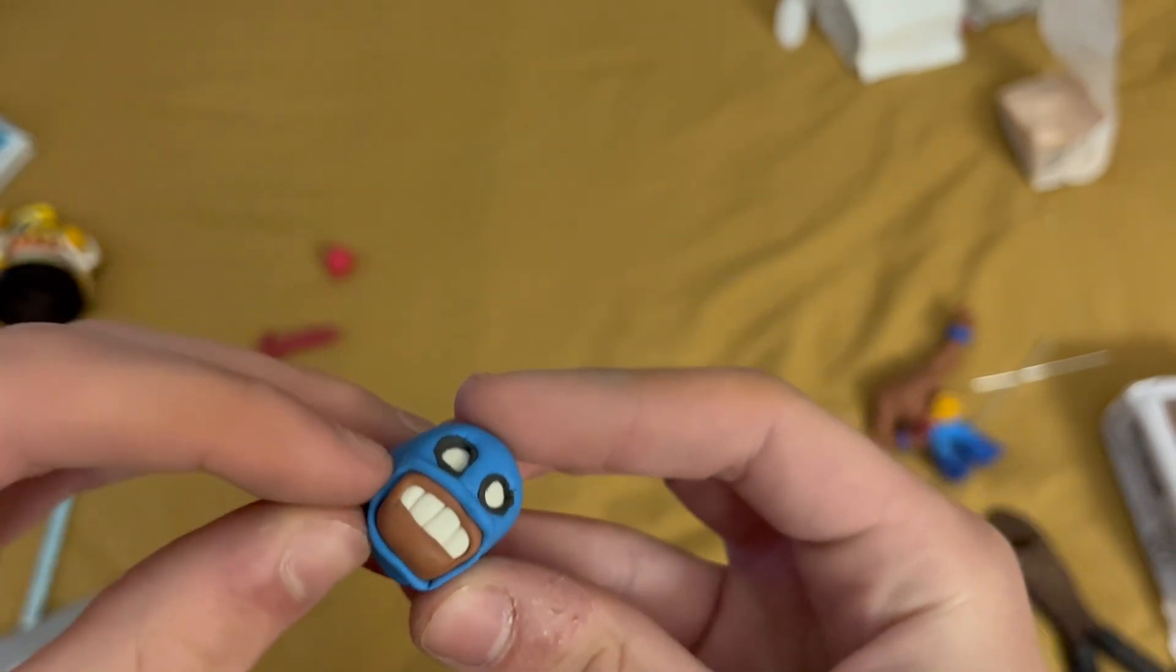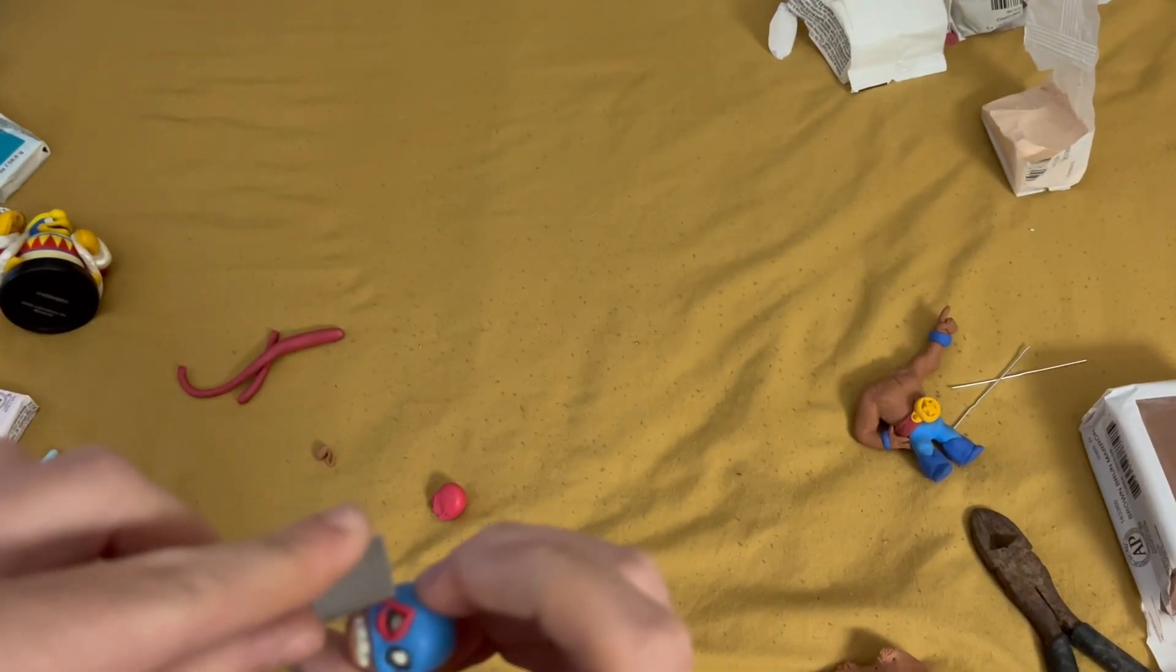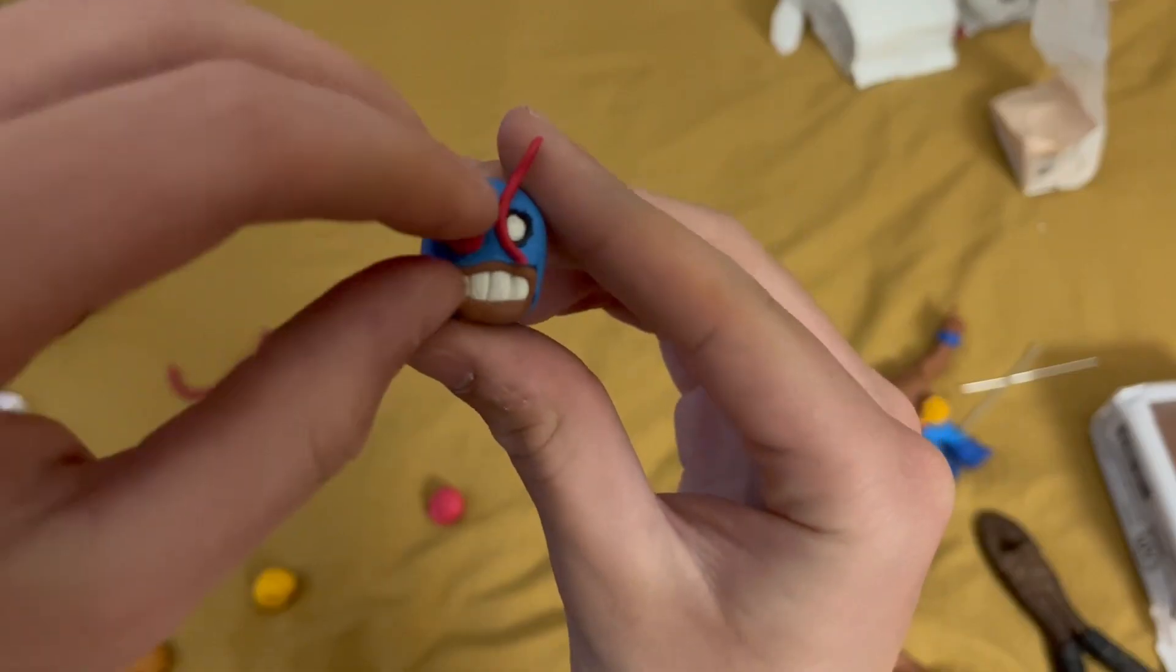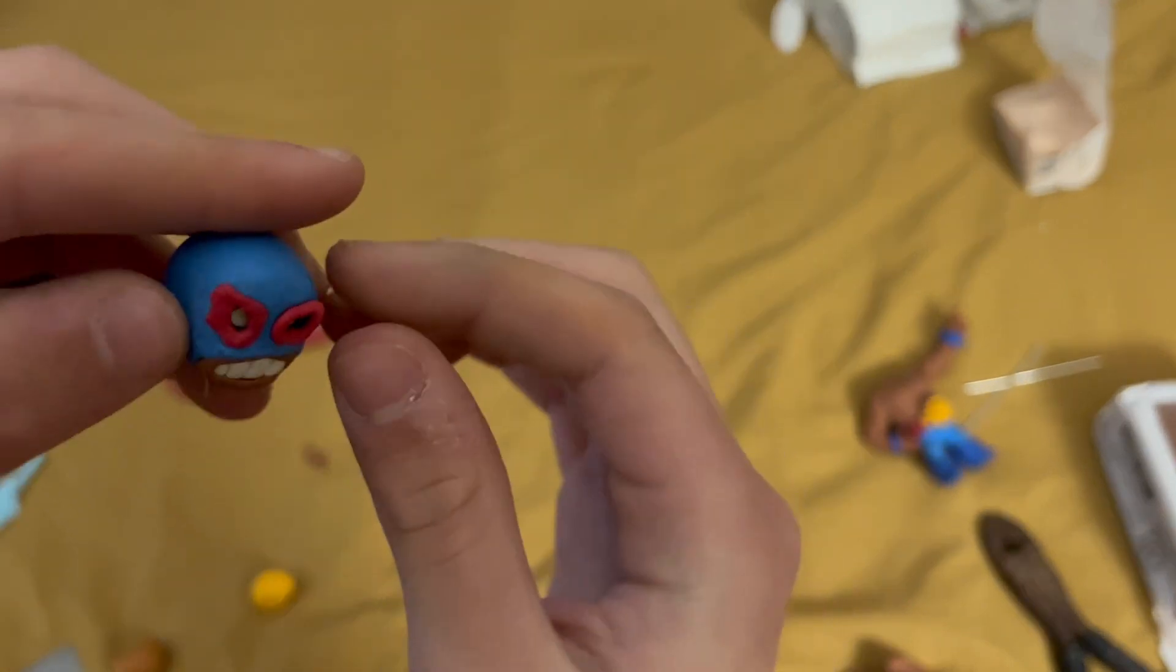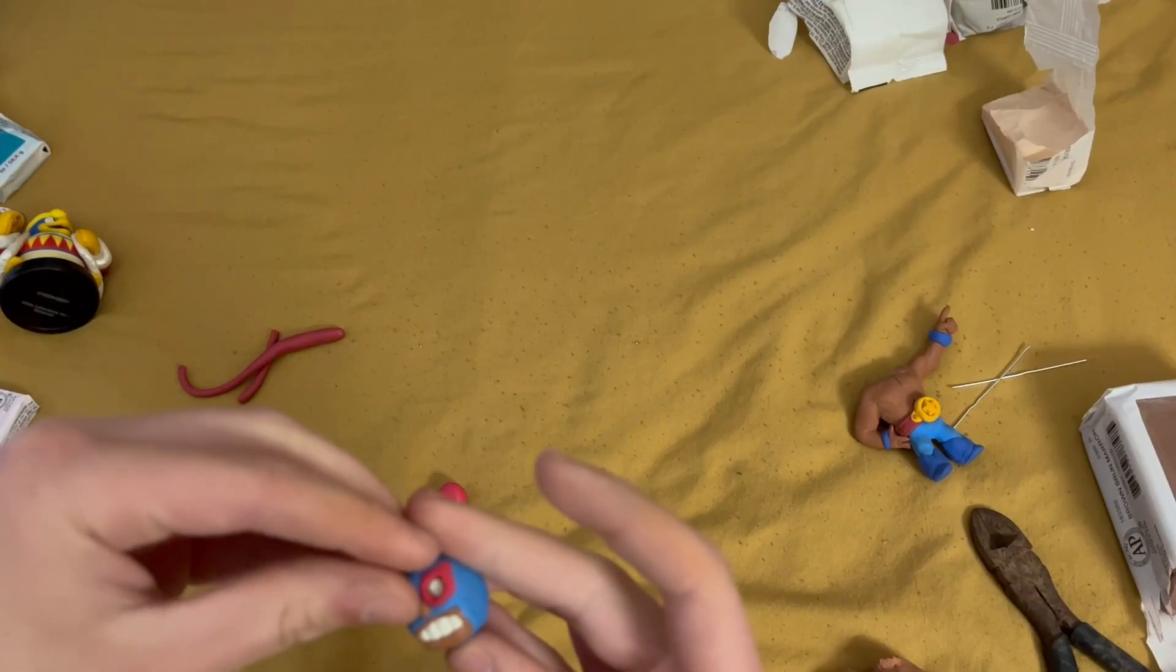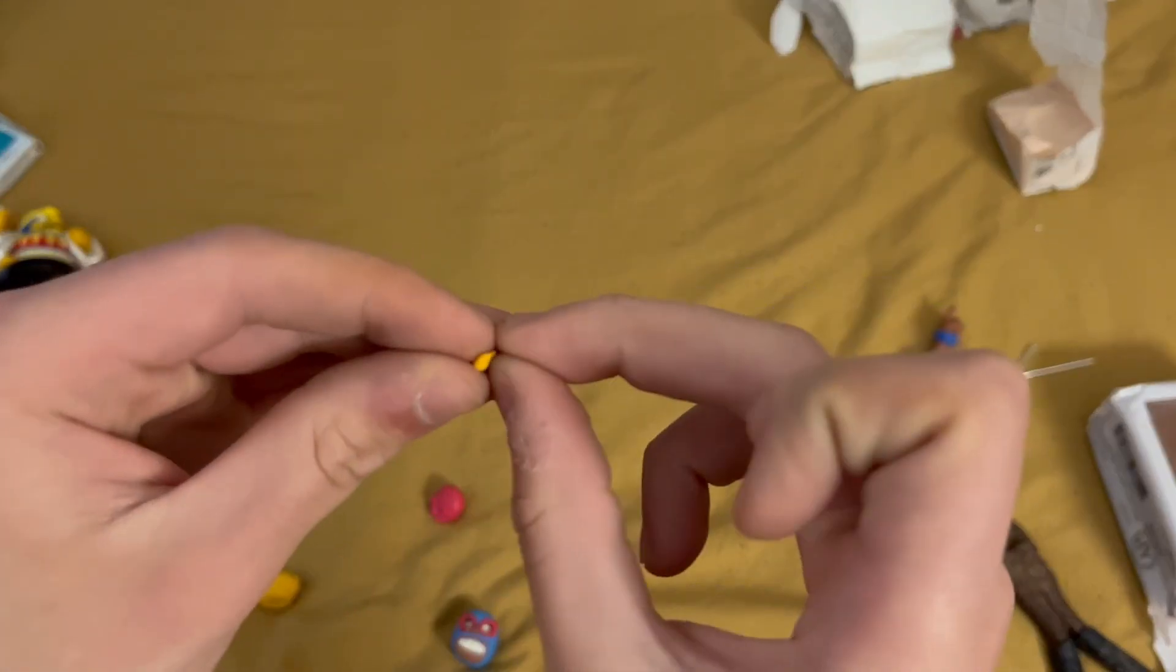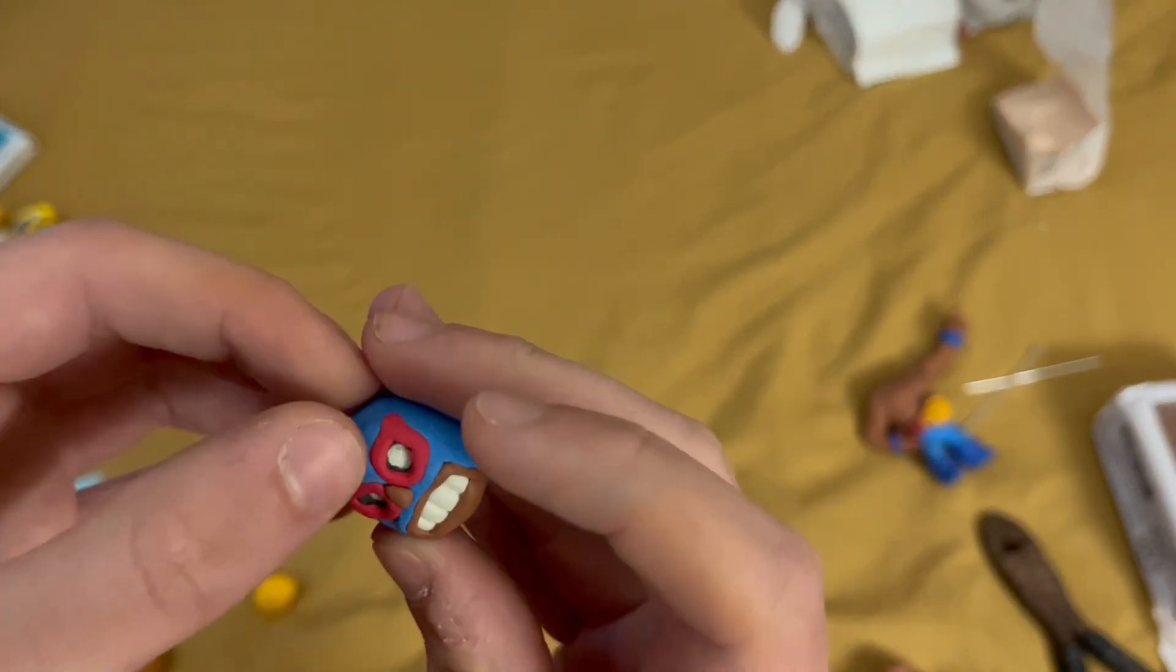Once this is blended in as well, it's time to add the red markings around El Primo's eyes. This is done with a simple worm around the eye that is then flattened out with a little spike in the corner. This is repeated on both eyes with the actual spike pointing out being mirrored on both sides. Once that's done, I add in a little nose using the same skin color, and I add in a little bitty emblem at the top.